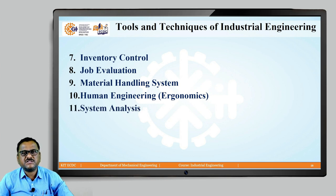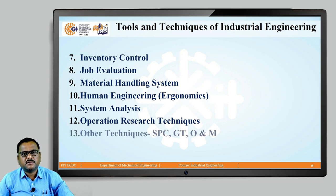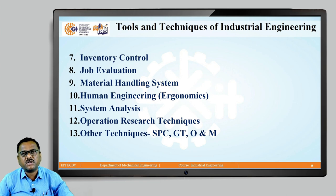The next technique is system analysis, where we perform a detailed analysis of a particular system and focus on how it is possible to further improve that system so that productivity can be increased. The next technique is operation research techniques. Operation research is a separate field, but its techniques are adopted to improve productivity. There are also other techniques used by the industrial engineer to improve productivity: statistical process control, group technology, and O and M technique. All these techniques are used by the industrial engineer to increase or improve productivity, and we will see all of them in detail in forthcoming lectures.